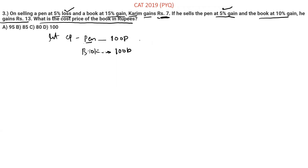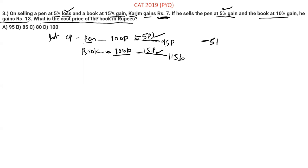On selling the pen at 5% loss, the loss is 5P. On selling the book at 15% gain, the gain is 15B. Kareem gains 7 rupees total, so minus 5P plus 15B equals 7. This is equation 1.